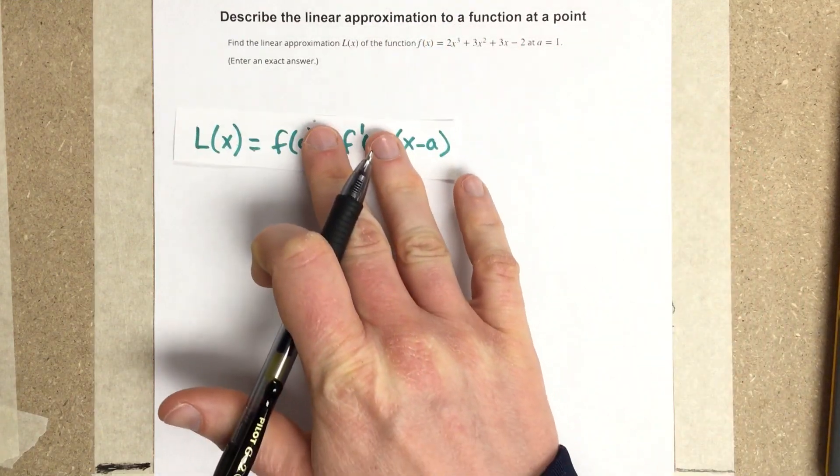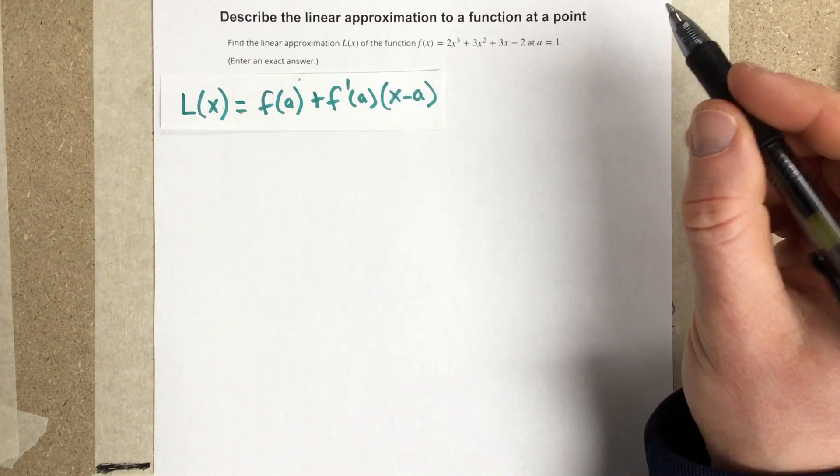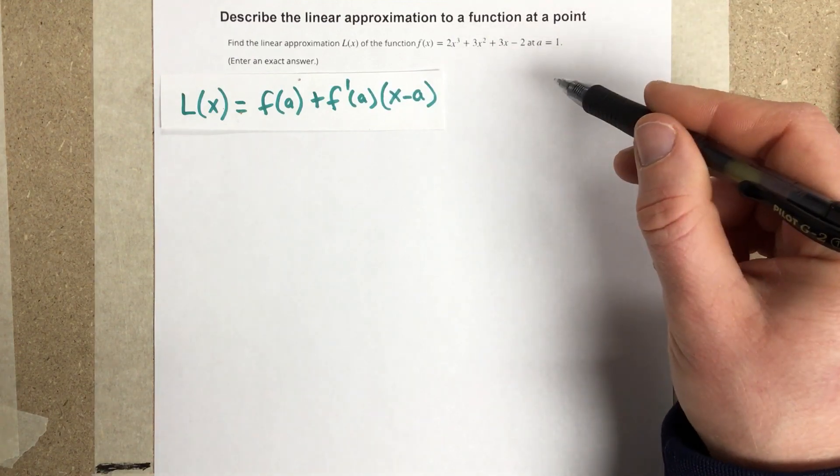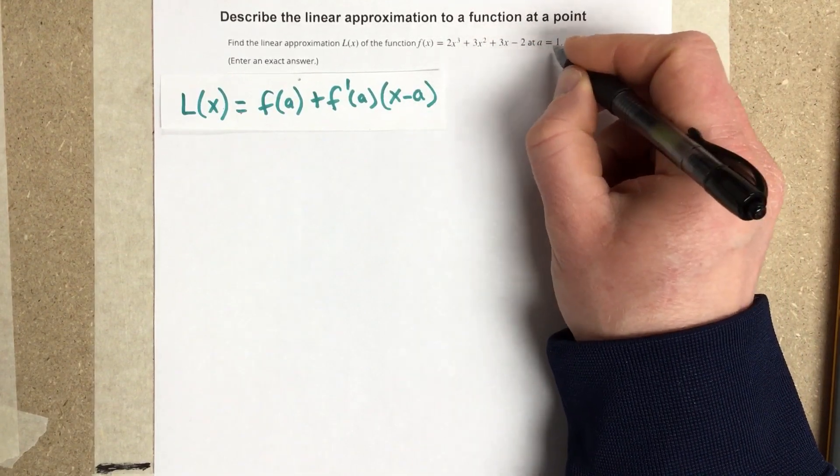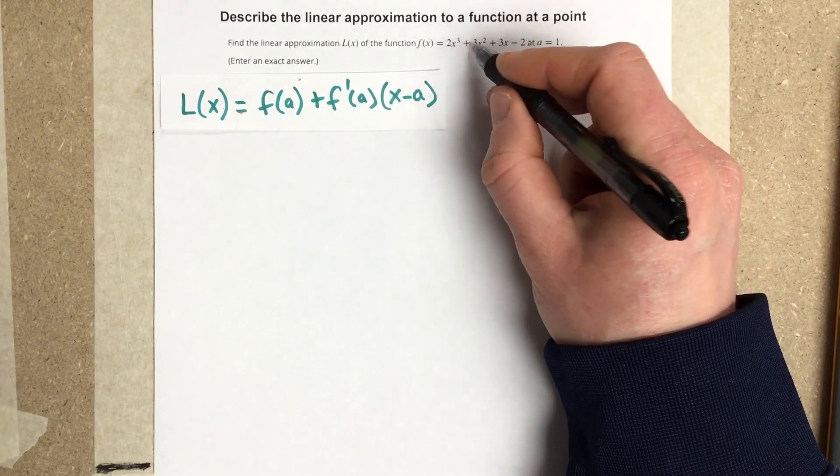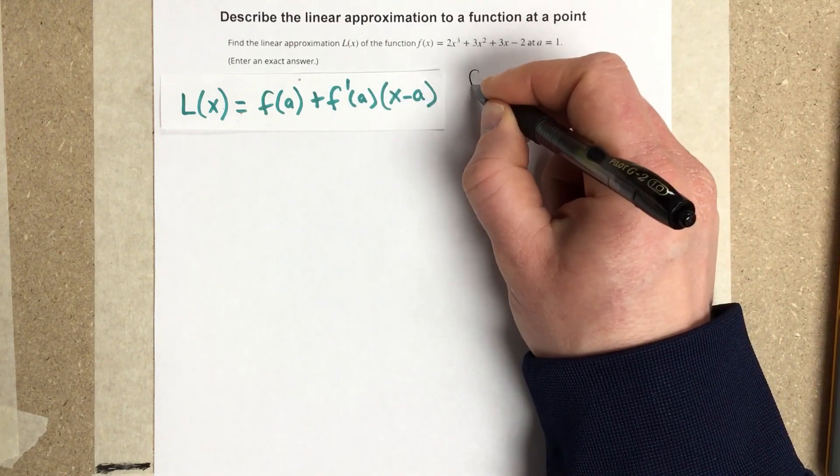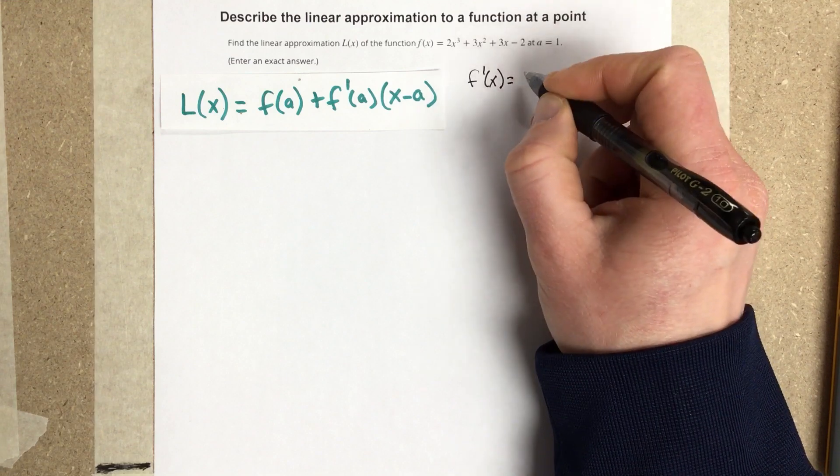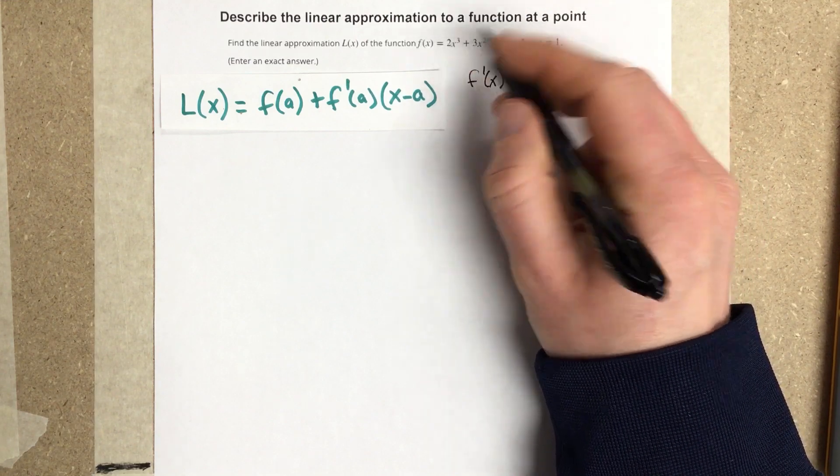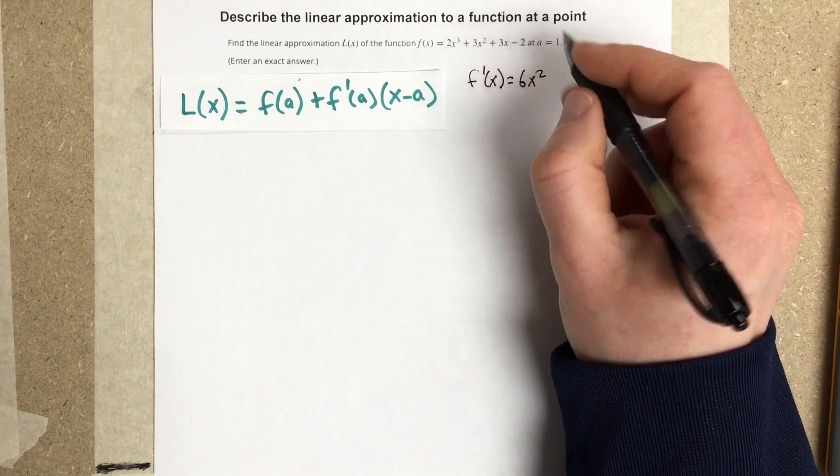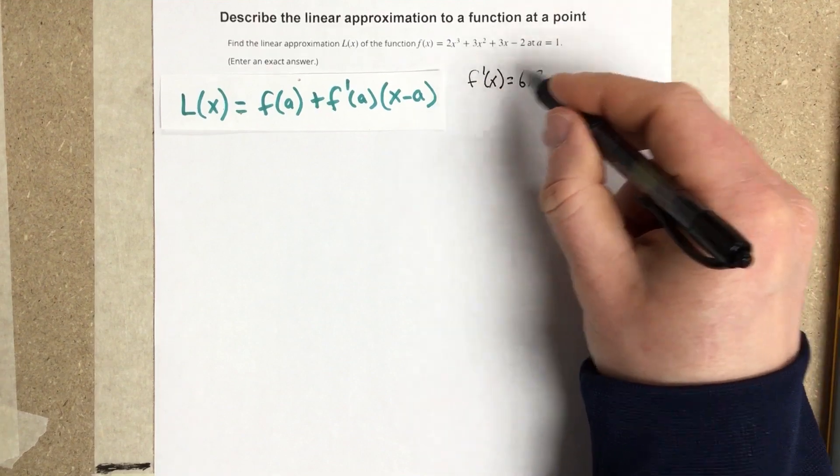To find this linear approximation, we're going to find the derivative first. So f'(x) is equal to 6x² plus 6x plus 3. That's the first derivative.